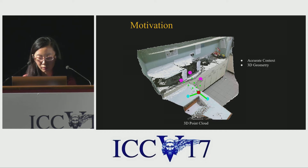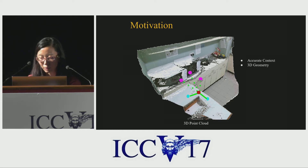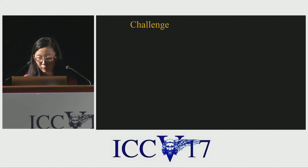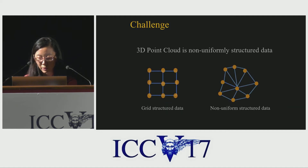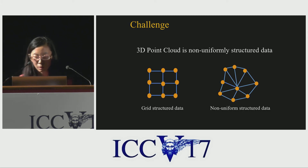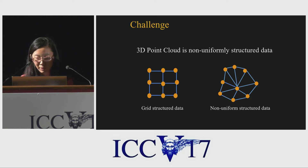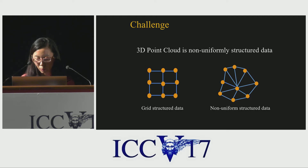In this work, we propose a general framework to utilize 3D point cloud for RGB-D semantic segmentation. Different from 2D images, which are well structured, the structure of 3D point cloud is non-uniform. Operations like 3D convolutions are not really applicable in this setting. How to efficiently learn representations over such data is a very challenging problem.